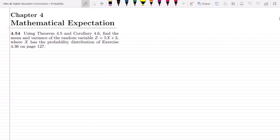Welcome back guys. Question 4.54: Using theorem 4.5 and corollary 4.6, find the mean and variance of the random variable Z equals 5X plus 3, where X has the probability distribution of exercise 4.36 on page 127.